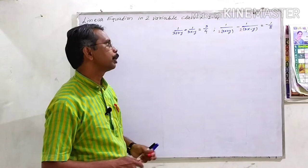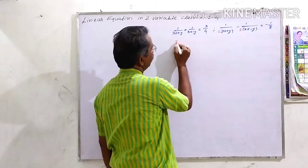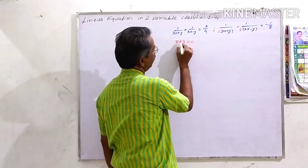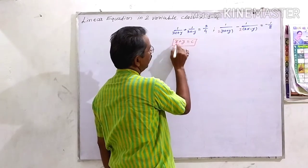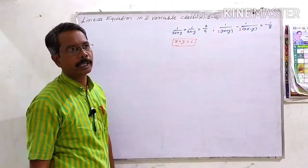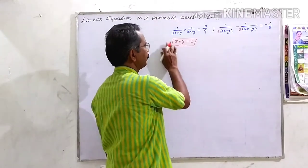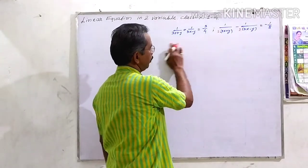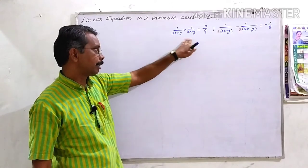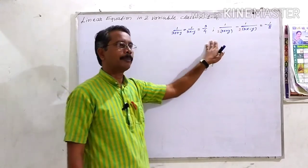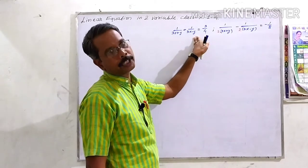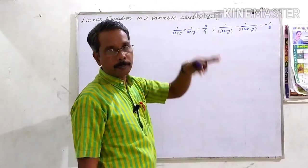As we know, we require the equation in the form of ax plus by equal to c, that is the simplest form. But the given equation is in a different form, so first we have to convert such an equation into the simplest form.